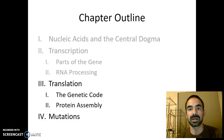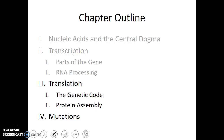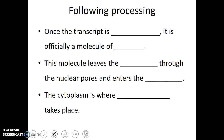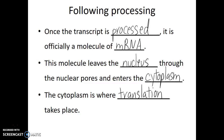In this video, we'll talk about the second step of the central dogma, which is translation. Transcription was making RNA from a DNA template. Translation will be using that information in the RNA to make a protein. Once the transcript is processed, it is then officially a molecule of mRNA. This molecule leaves the nucleus through the nuclear pores, and in doing so it enters the cytoplasm of the cell. The cytoplasm is where translation takes place.